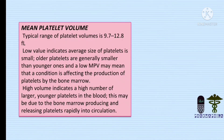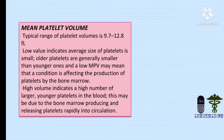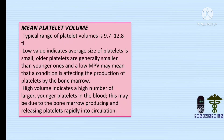The typical range of platelet volume is 9.7 to 12.8 femtoliters. A low MPV value means the average size of the platelet is small. Older platelets are generally smaller than younger ones because immature platelets are larger in size. A low MPV means that a condition is affecting the production of platelets by the bone marrow — something is wrong with the bone marrow machinery. A high MPV indicates a higher number of larger, younger platelets in the blood, which may be due to the bone marrow producing and releasing platelets appropriately into the circulation.